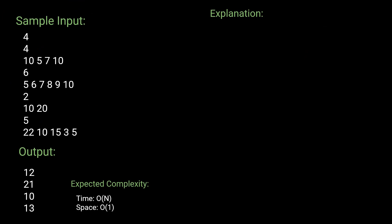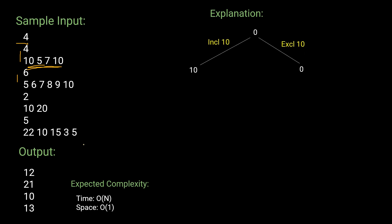Let's talk about the sample inputs and explain the first one. We'll draw a decision tree. Initially, the time required to solve zero tasks is zero. For the first task taking 10 units of time, we have two options: include the task or exclude it. We can't exclude two consecutive tasks. If we include task 10, the time so far is 10.